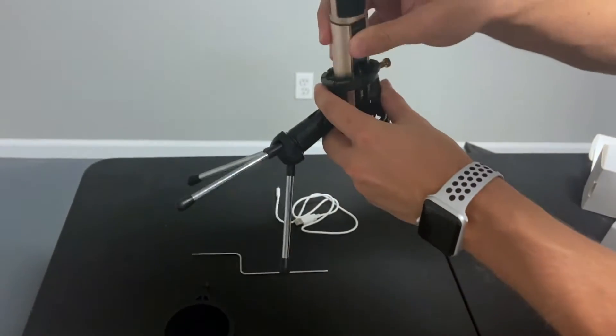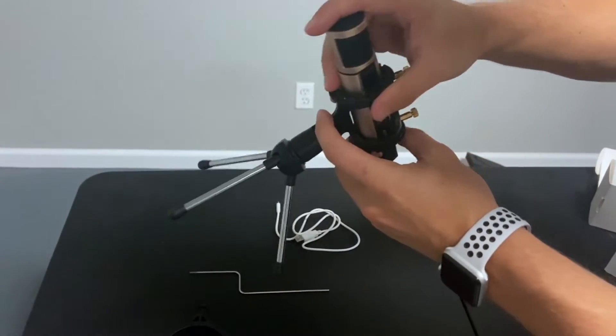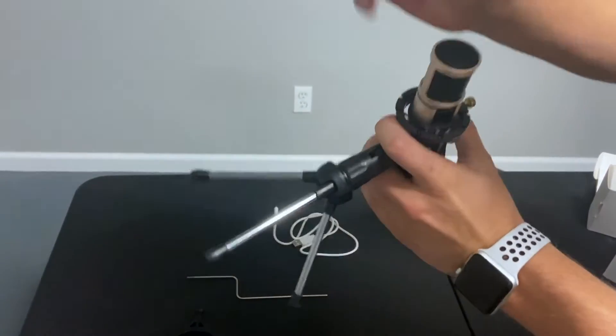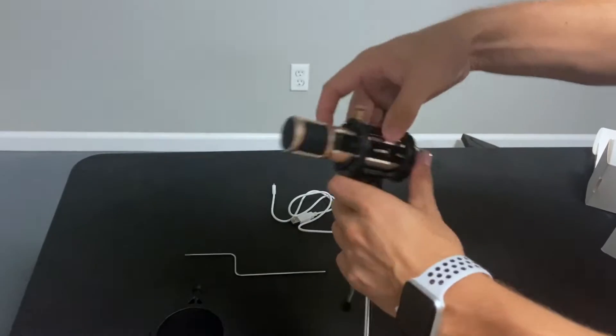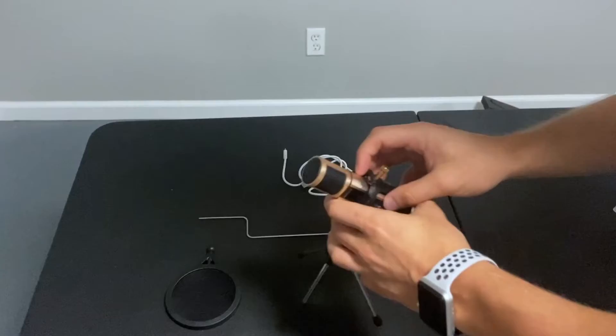So first thing you need to do is just put the microphone through here. It's pretty easy. You just have to get around the little cords or strands there. Make sure you can hit the on off button and the other buttons as needed.